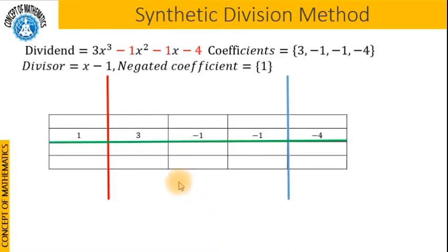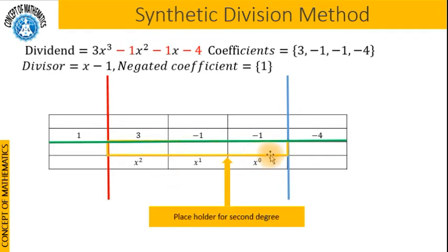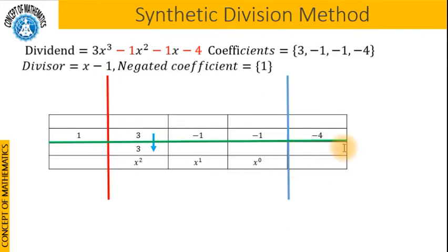The next step is to write down the coefficients — that is 3, negative 1, negative 1, and negative 4 — and set up the divisor in a division-like format, placing the negated coefficient of the divisor to the left of the bar. I have put a red vertical bar and a blue vertical bar here. When we divide a third degree polynomial by a first degree polynomial, the quotient will be a second degree polynomial, so I have left a placeholder for the quotient section, and this part will be called the remainder section.